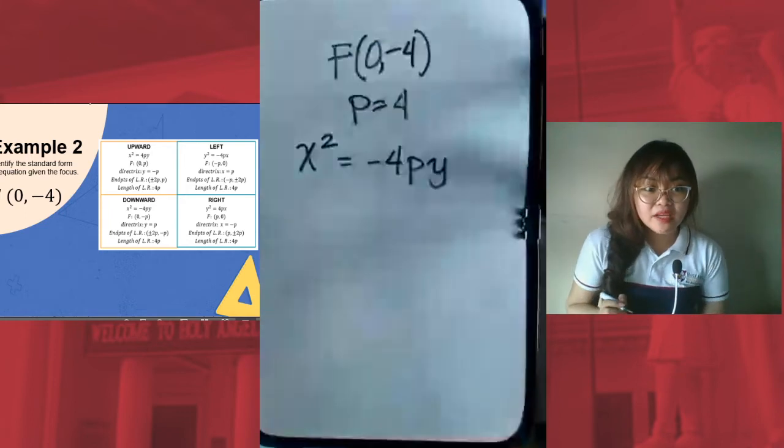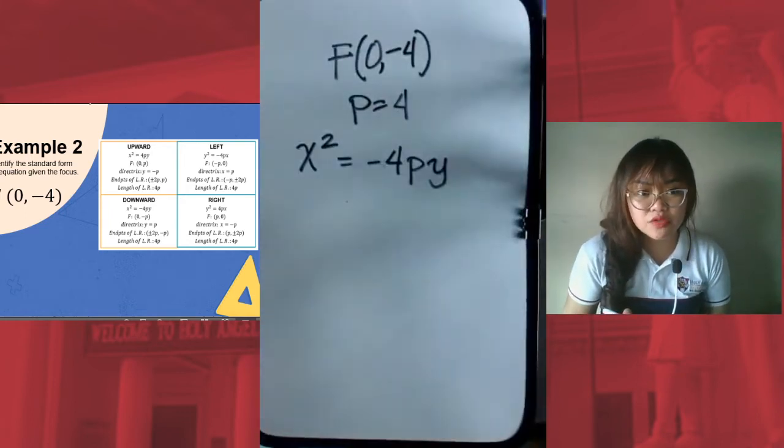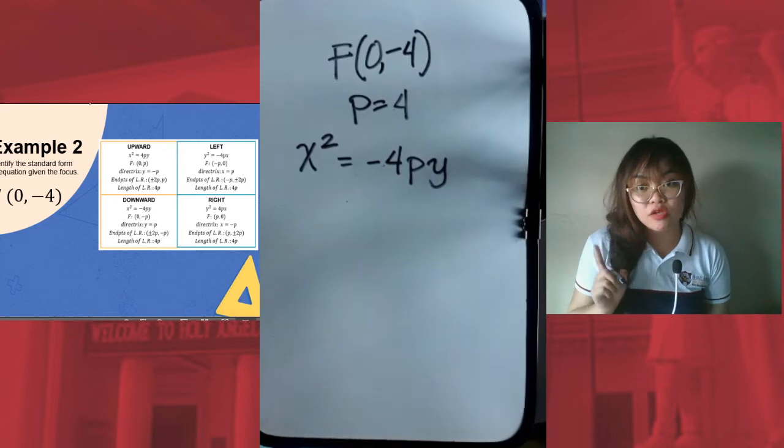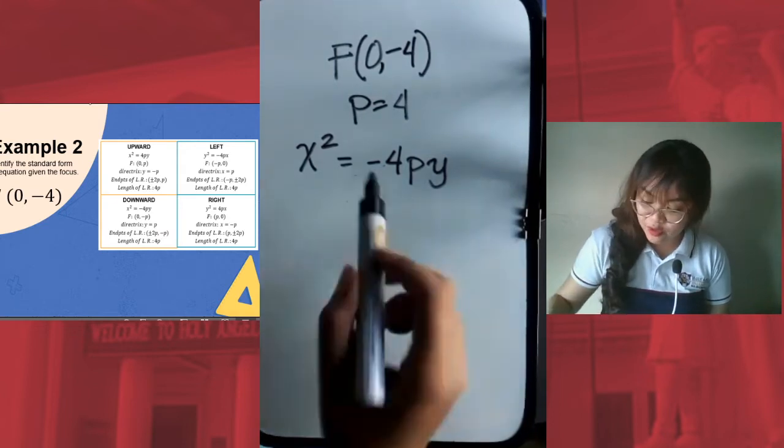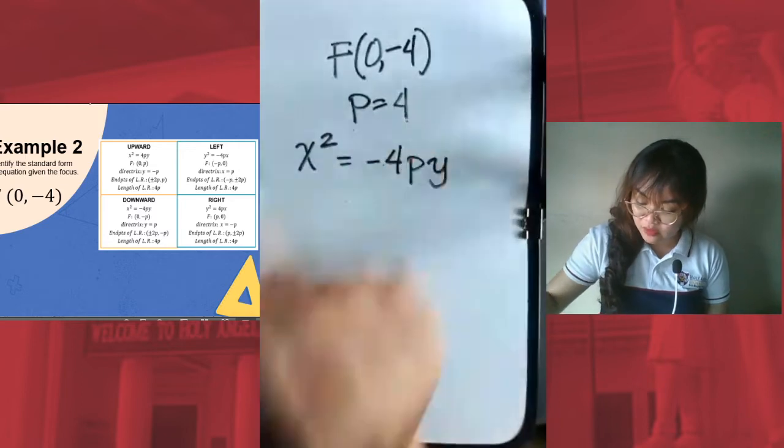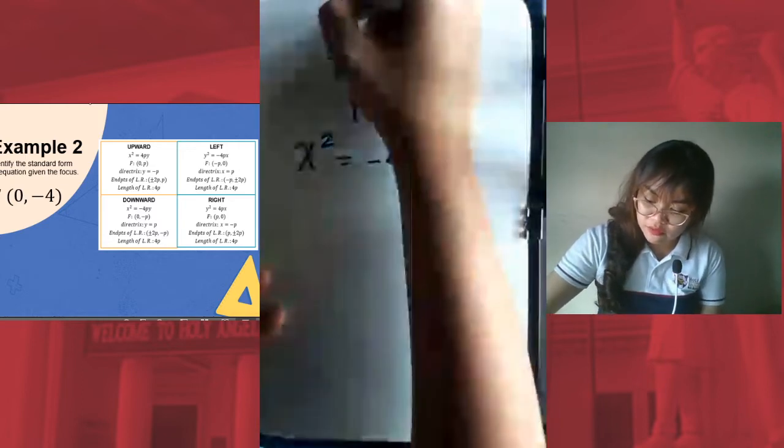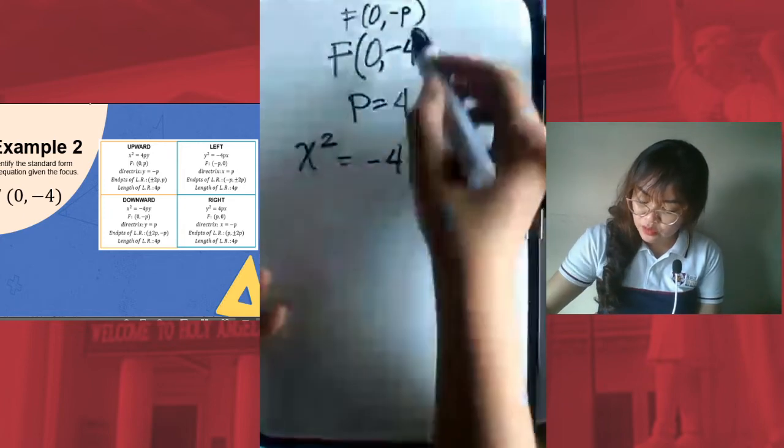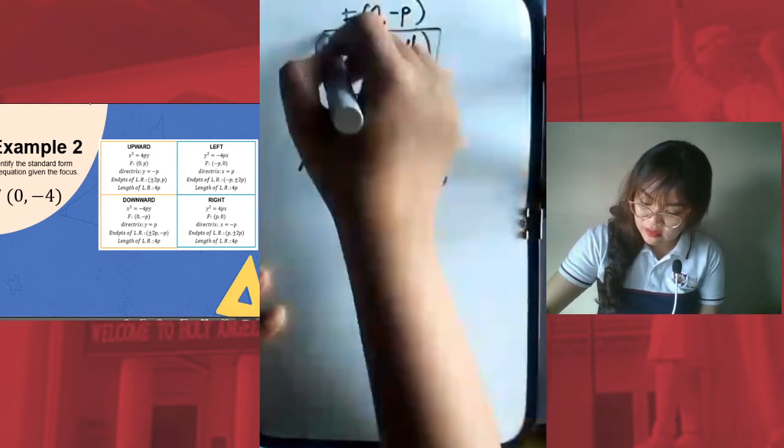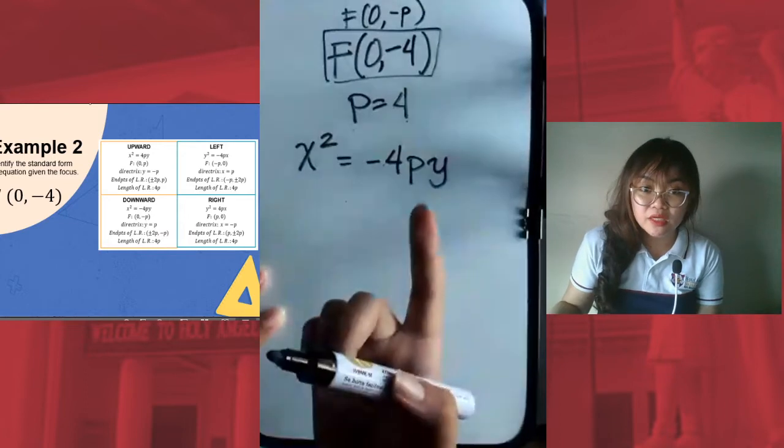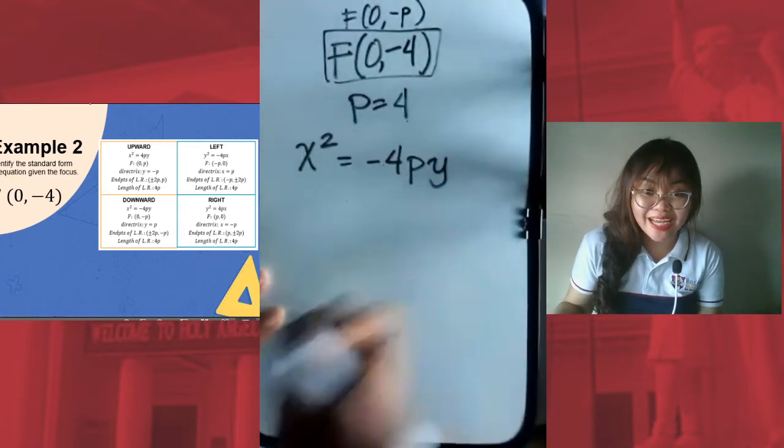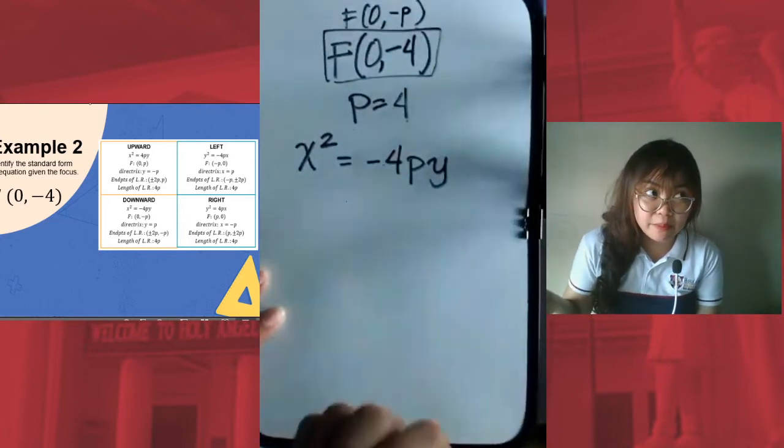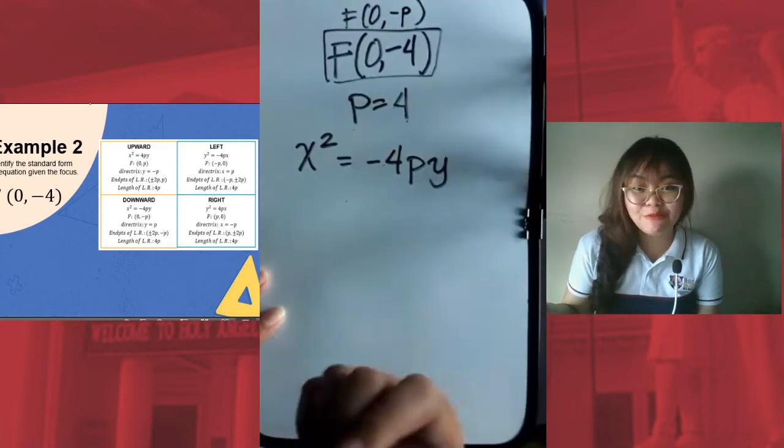Mom, negative yung given. Shouldn't we use the negative value? We are just looking for the value of p, not negative p. Therefore, p is just 4. If you substitute to the formula F(0, -p), then you would arrive at this. Okay? So p is always positive. In short, p is always positive. P for parabola, P for positive.